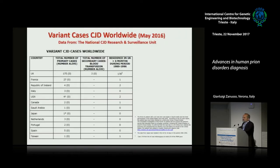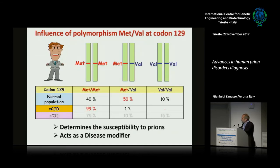Variant Creutzfeldt-Jakob disease is almost a finished disorder. Following the BSC epidemic, there are very few new cases. The last cases observed were in the UK — 178 total. There were three cases in Italy and four in the United States. The distribution is related to BSC exposure. Codon 129 predisposes to BSC infection, since 99% of cases are homozygous methionine, while one reported case is heterozygous at codon 129.